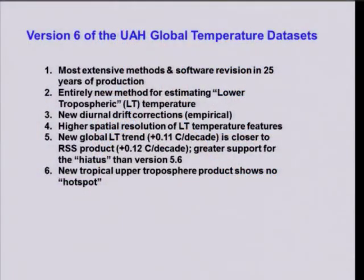So we came up with a new method for monitoring lower tropospheric temperature. We've got a new diurnal drift correction adjustment, which I'll explain in a minute. The new product has higher spatial resolution because of the way we do the lower tropospheric temperatures. Our new trend — and this was unexpected — ended up actually being a little below the RSS trend. Since 1979, we get 0.11°C per decade, which is really close to the Remote Sensing Systems product. We cooled the latter half of the record, and all the adjustments brought us into very close agreement with RSS, which we didn't expect — it's just the way the numbers turned out.